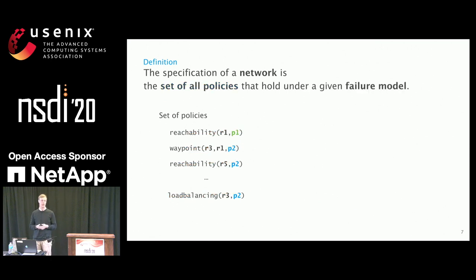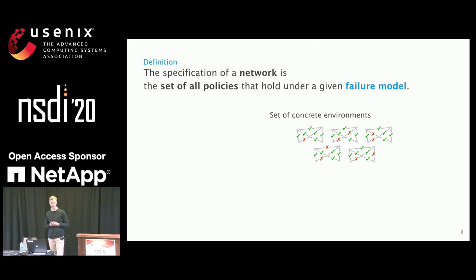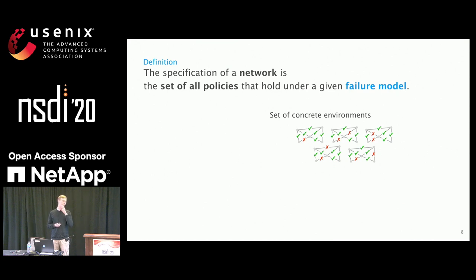This is what the failure model is. A failure model is basically a set of concrete environments — topologies in which you assign to every link the state of up or down, represented by a green check mark or a red cross. You say that in this context, for these concrete environments, the set of policies should hold.